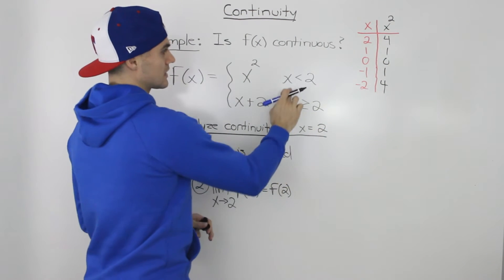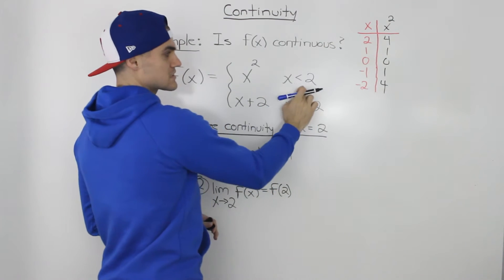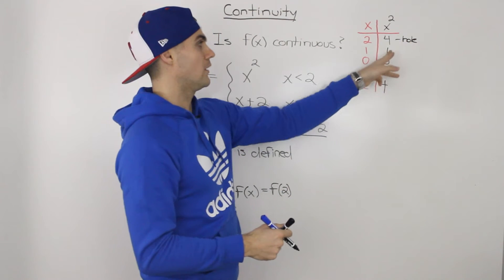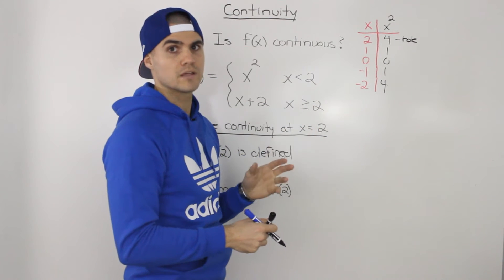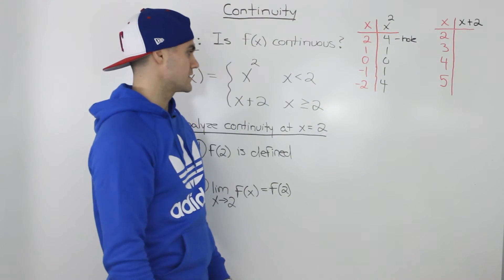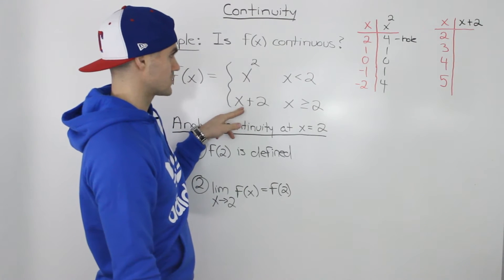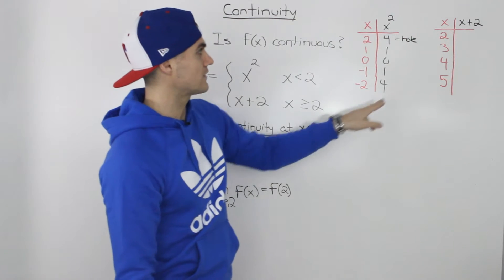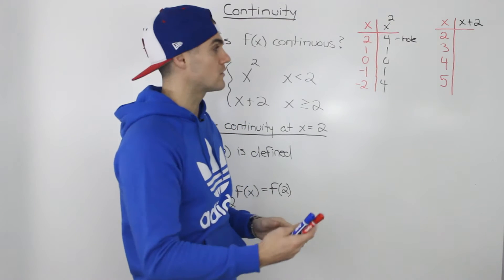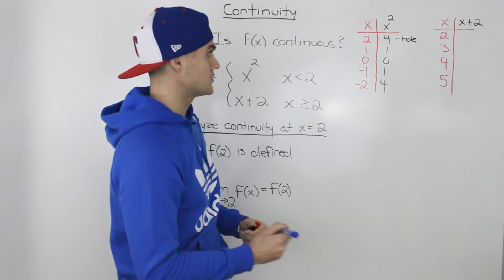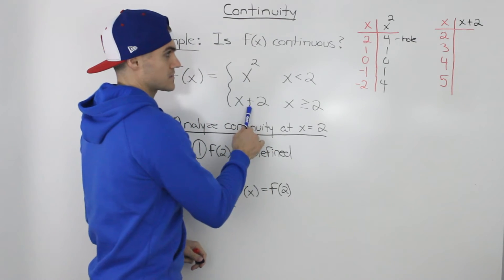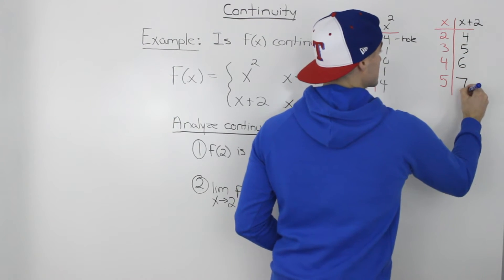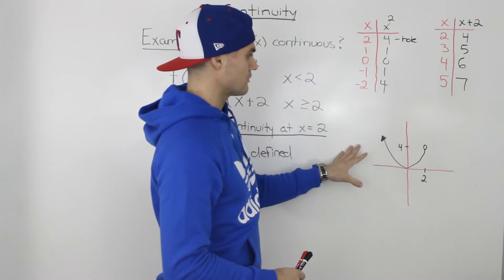At x equals 2, since this piece is not defined there, there will be a hole. However, it's still useful to know the y value at that hole for when we draw the graph. Now let's make a table for the second piece: y equals x plus 2 for x greater than or equal to 2. Starting at x equals 2 and picking a couple values greater than 2, the y values are 4, 5, 6, and 7.